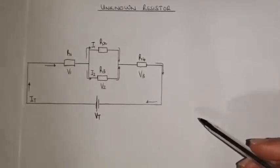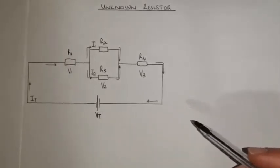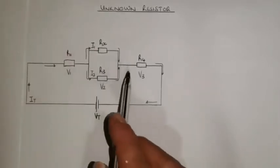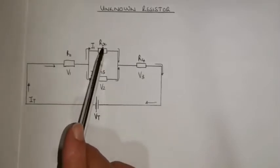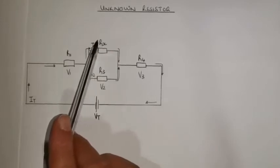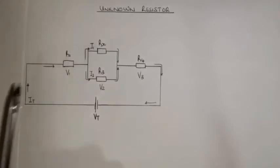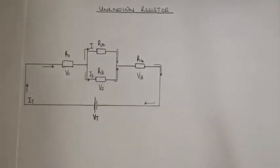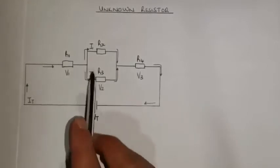Hi guys, and welcome back to my next video. In this video we will be discussing how to calculate an unknown resistor. What you can see here is a parallel-series circuit, and the only thing I've changed is that we have an unknown resistor which is my Rx. What I've seen students do is they are too concentrated on Rx, which means they don't know how to start solving a circuit like this. So I'm going to go step by step through the circuit.